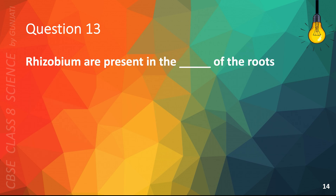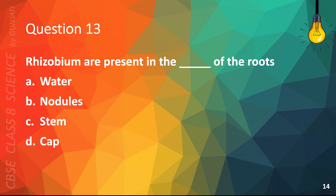Question 13. Rhizobium are present in the blank of the roots: A. Water, B. Nodules, C. Stem, or D. Cap. The correct answer is B. Nodules.